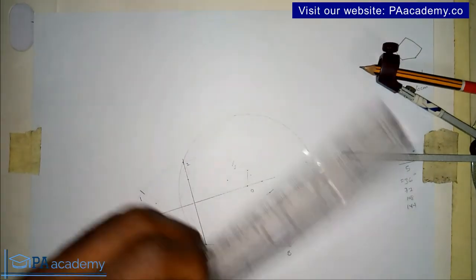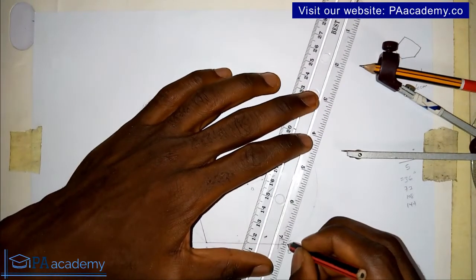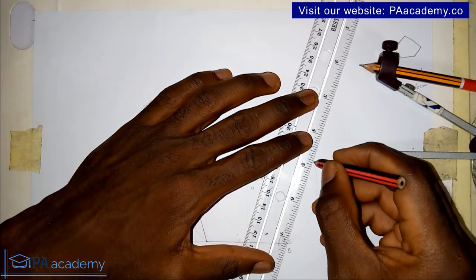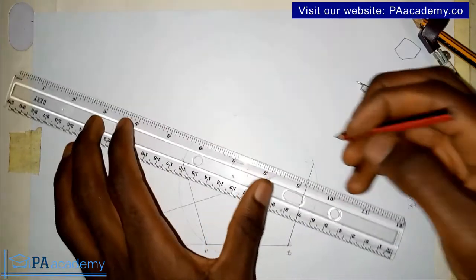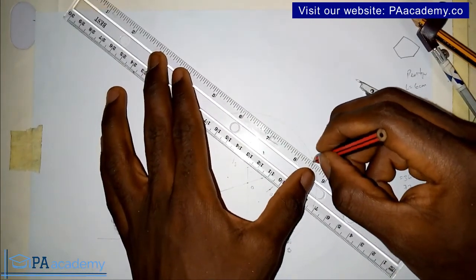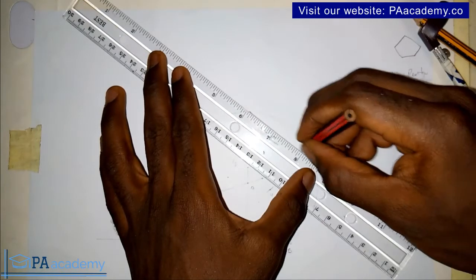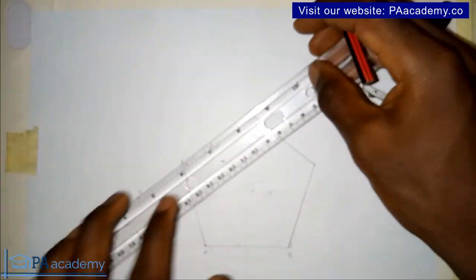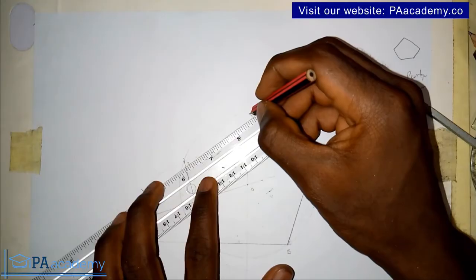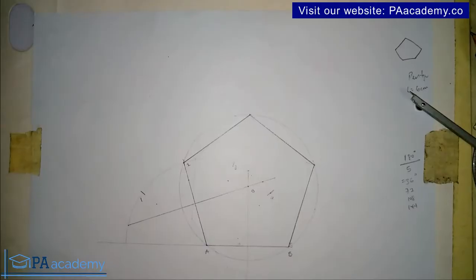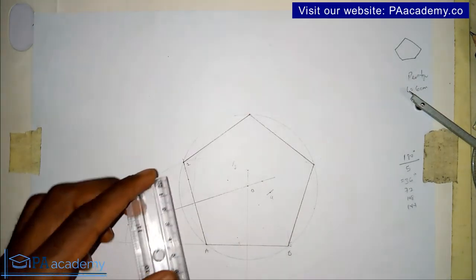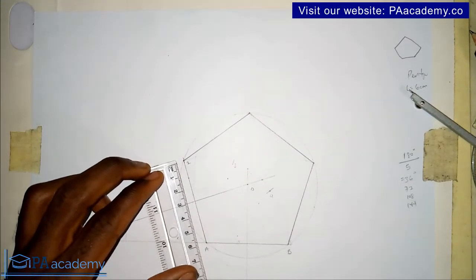Next thing is to join those points. And here we have our pentagon with five sides of six centimeters.